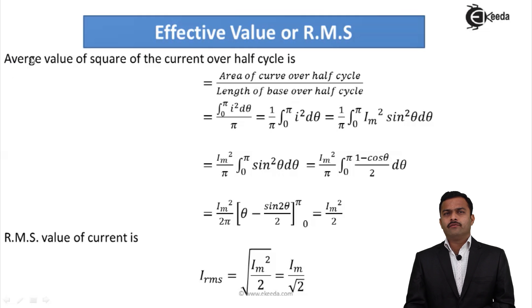But that is nothing but the average value of square of the current. What we want is root mean square. So RMS value of current is nothing but root of this value. So I_RMS = √(I_m²/2). If I further simplify, I will get I_RMS = I_m/√2.